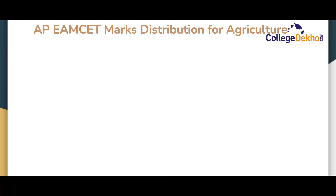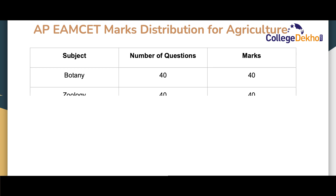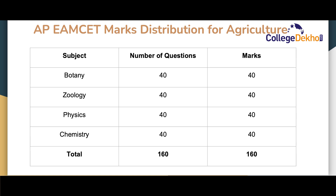Now let us look at the marks distribution for the agriculture exam in AP EMSET. The botany subject will consist of a total of 40 questions for 40 marks. Geology will consist of 40 questions for 40 marks. Physics will have 40 questions for 40 marks, and chemistry again 40 questions for 40 marks. The total marks for the agriculture exam will be 160 for a total of 160 questions.